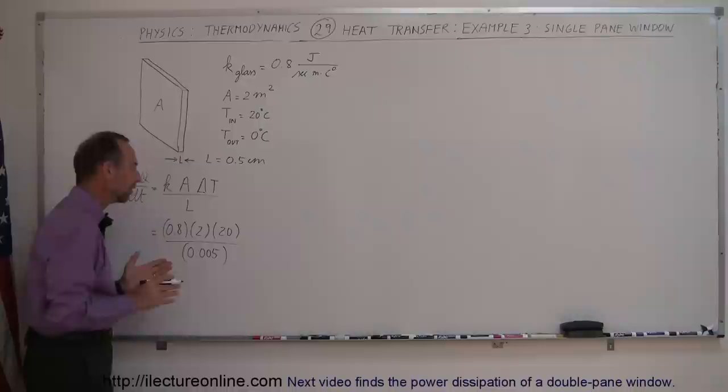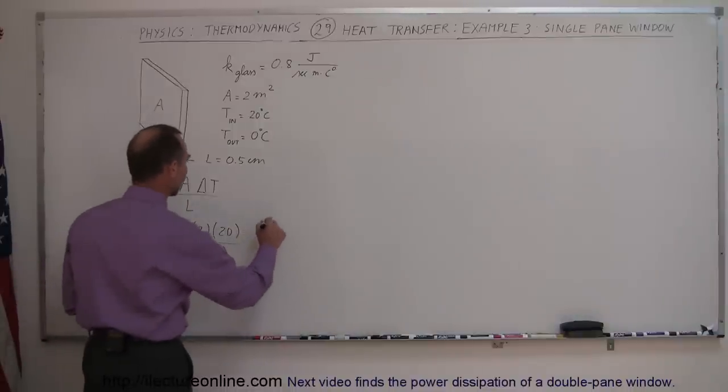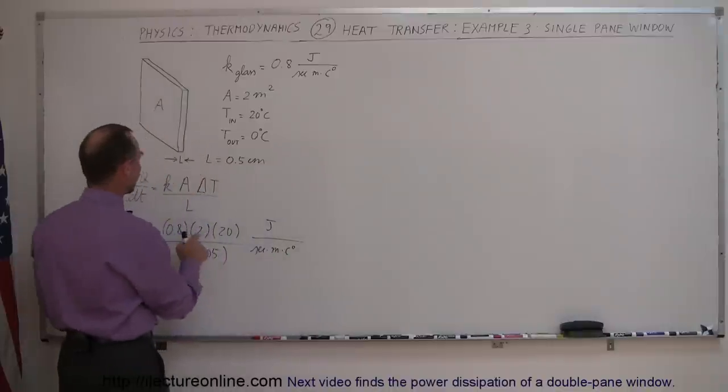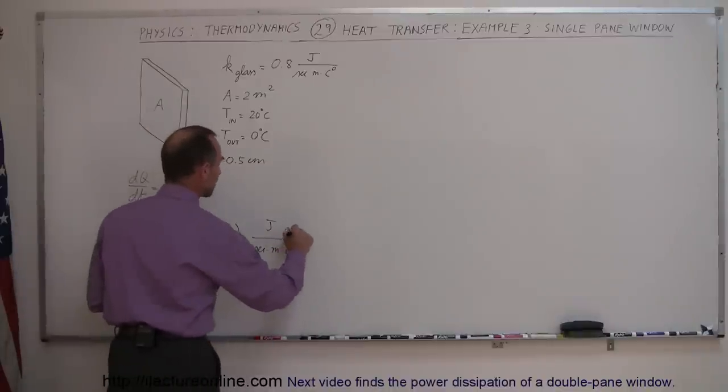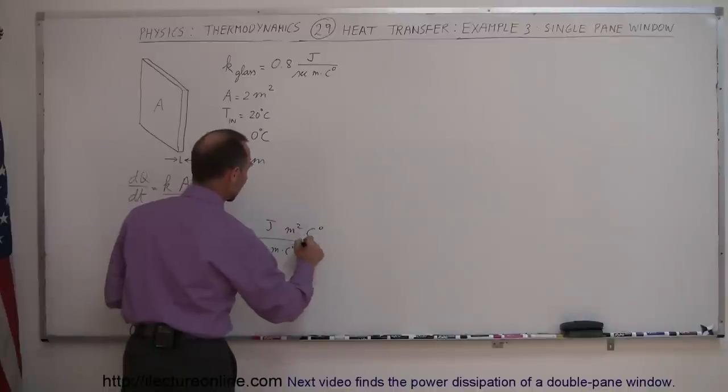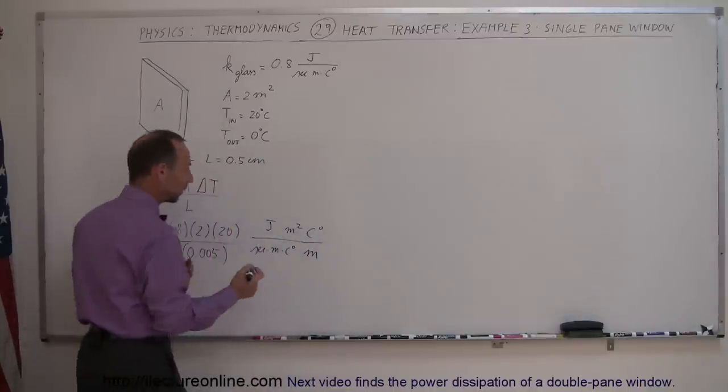For units, notice that K has joules per second per meter per degree Celsius. Cross-sectional area is meters squared. Temperature difference is degrees Celsius. Length is meters. So what do we end up with?